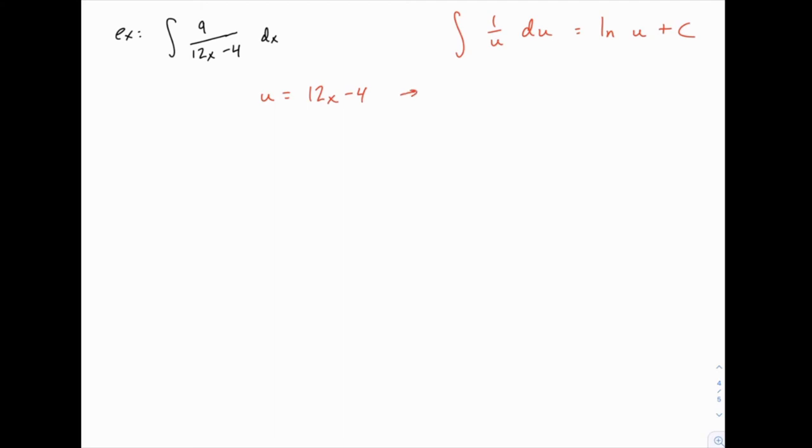And we can start with that starting point and work from there. Once we've picked u, the first step is always to find du, which will be the derivative of u. In our case that's 12 times dx. And then we can make our substitution. So in this case, we'll have the integral, the denominator will get replaced with u. And then the tricky part is that we don't have a 12 dx to substitute out.